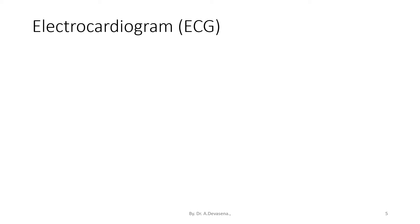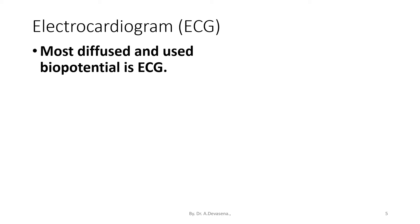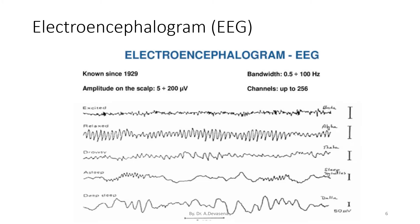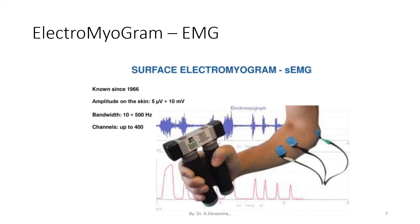Let us see the representation of ECG. The most diffused and used biopotential is ECG. Here is a representation of ECG; it has been known since 1842 itself. Electroencephalogram EEG is brain-related activity; here is a representation of EEG, known since 1929 onwards. Electromyogram EMG is muscle-related activity; here is a representation of EMG, known since 1966 onwards.